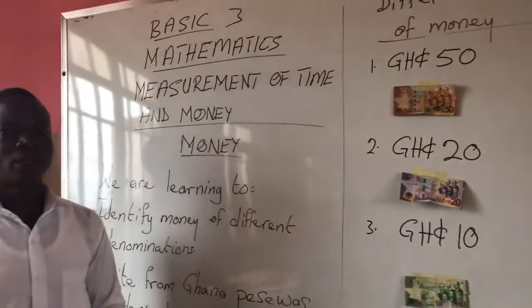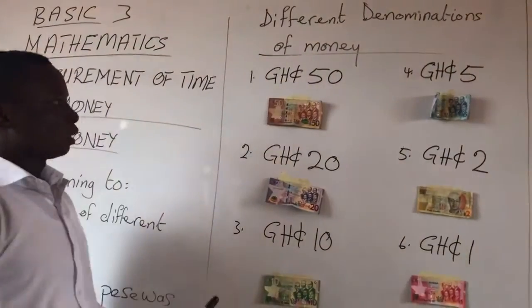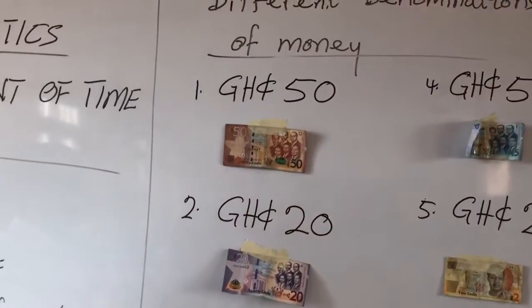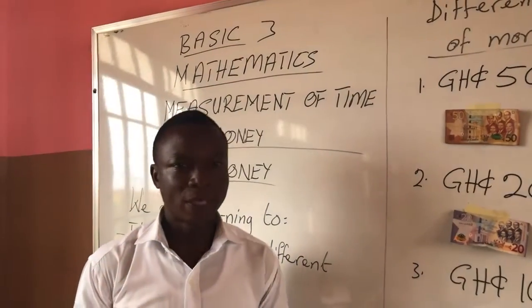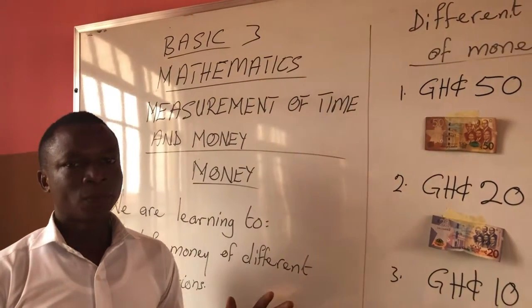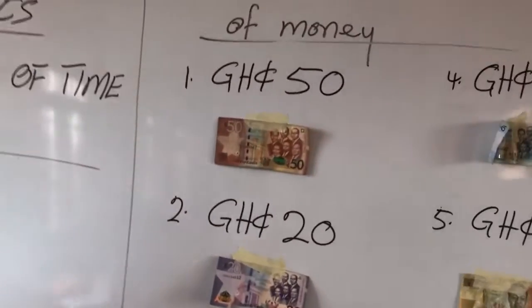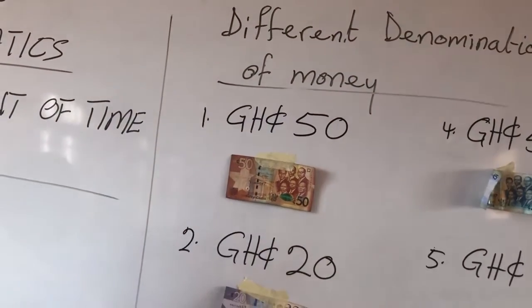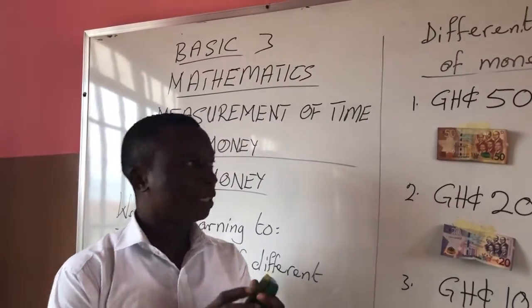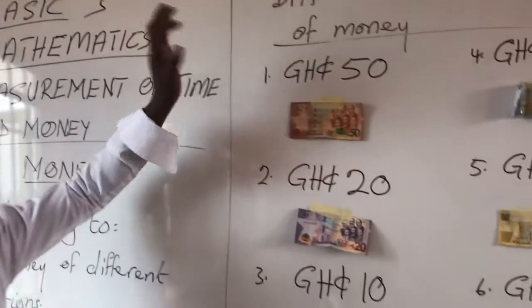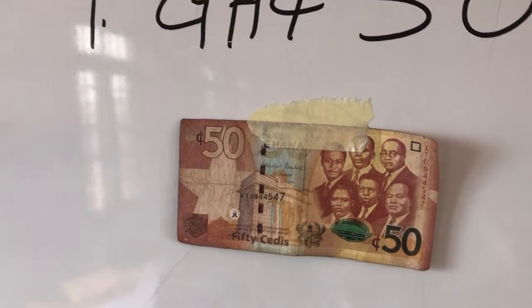Let's look at some of these denominations. We have the 50 Ghana cedis, which is in this form. Look at the features - some of the things that you can identify from this money when you look at it. The Independence Arch is there, the big star. The coat of arms is also there.